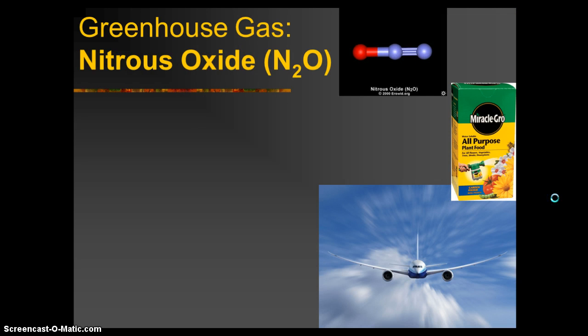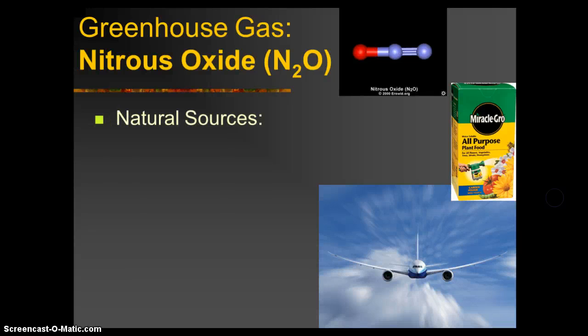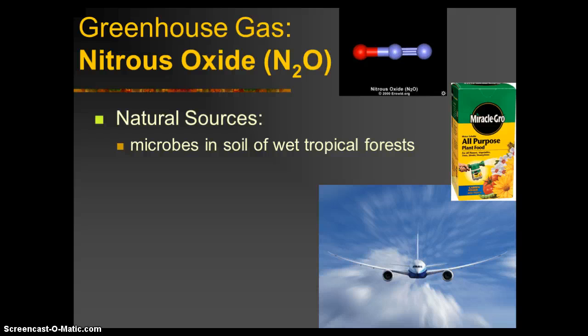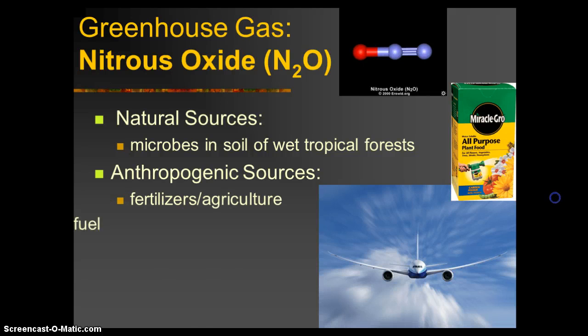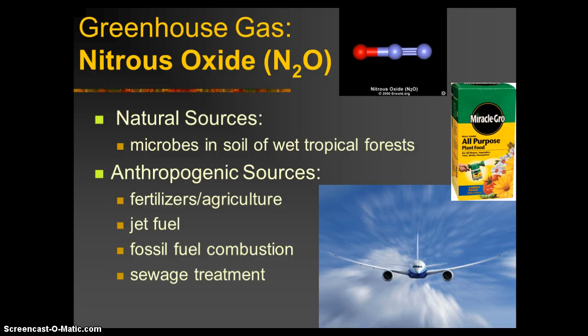The next greenhouse gas is nitrous oxide, N2O — referred to in Unit 1 as NOx gases. There is only one natural source: microbes in the soil of wet tropical forests. Anthropogenic sources come from fertilizers, agriculture, jet fuel, fossil fuel combustion, and sewage treatment — all human-caused sources of this gas.